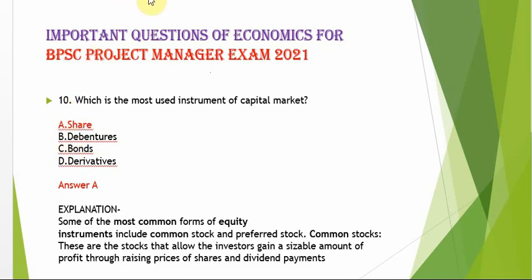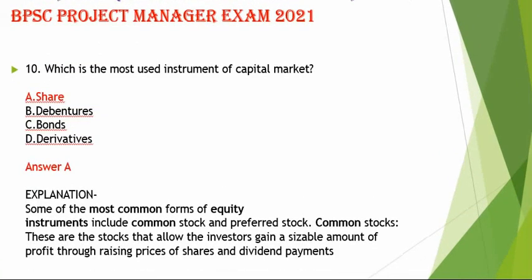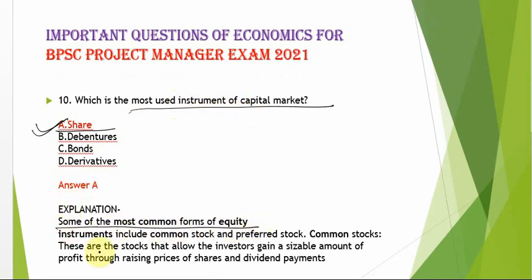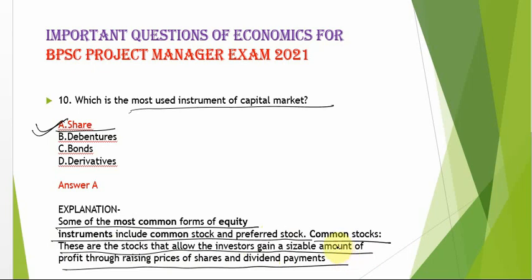The next question asks: what is the most used instrument of the capital market? Option A — share — is the most used instrument of the capital market. The most common forms of equity instruments include common stock and preferred stocks. Common stocks allow investors to gain profit through rising share prices and dividend payments.